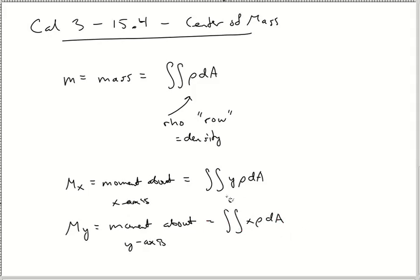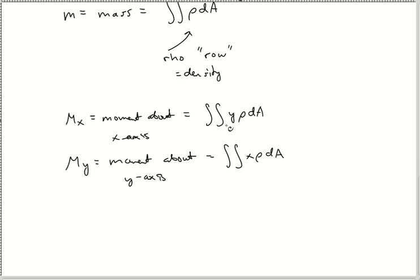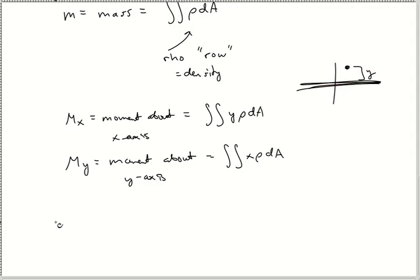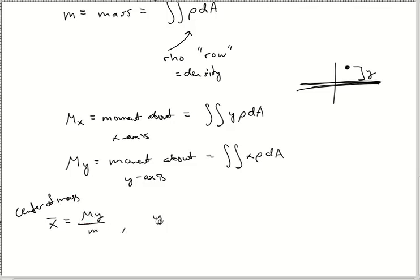I know it's kind of weird to have them backwards — like moment of x has a y and all that. It just has to do with the distance from that axis being y, your y height. If you have an x-axis, the height from it is your y value. So x̄ is M_y over little m, and ȳ is M_x over little m.